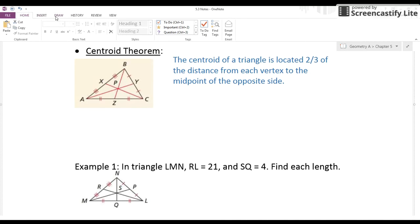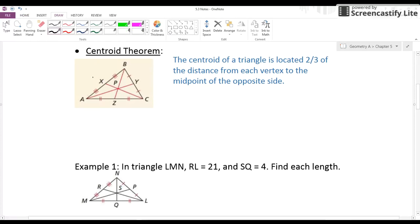If you take a look at this diagram, we know here that P is the centroid because notice it goes from a vertex to midpoint. So that makes it a centroid. We know P is the centroid of triangle ABC.